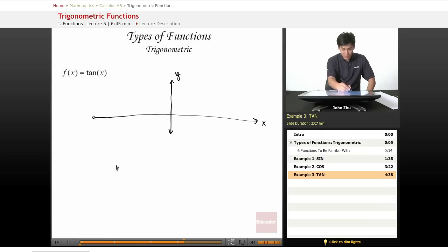So we know that tangent of x is defined by sine of x over cosine of x, and it's basically undefined every time that cosine of x equals 0.